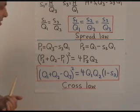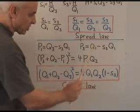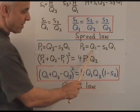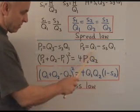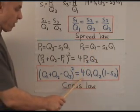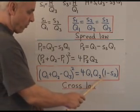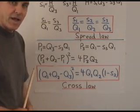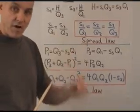On the right hand side, the p3 is this expression here. It factors as q1 times 1 minus s3. So when we plug that in there, we get 4 times q1 times q2 times 1 minus s3. And that's the cross law, the fourth of our main laws.